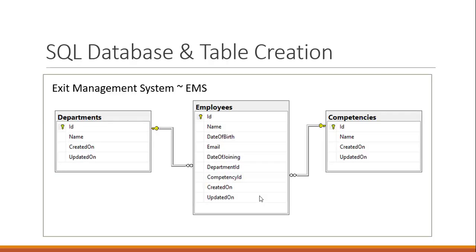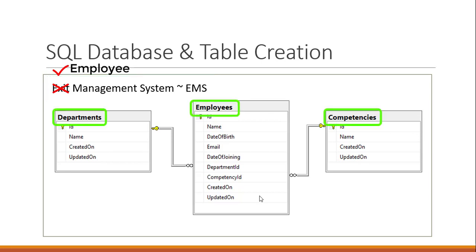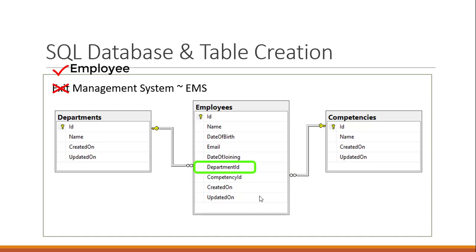Starting with the SQL database and table creation, let's first understand what databases and tables will be created. We will create a database called Employee Management System, aka EMS. Inside this, we will have three tables, starting with the main table employees, which will have columns: ID, name, date of birth, and updated on. If you notice, the employees table has a department ID column, which is a foreign key for employees but the primary key for departments. That's how we will get the name for the particular department the employee is working in.